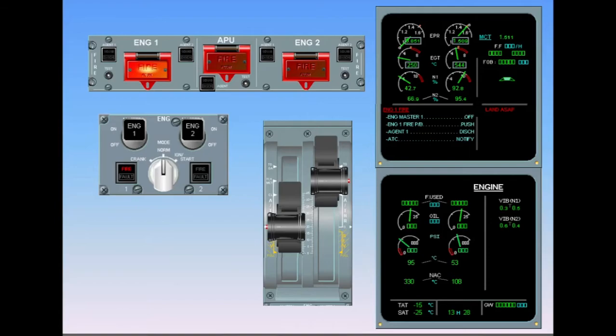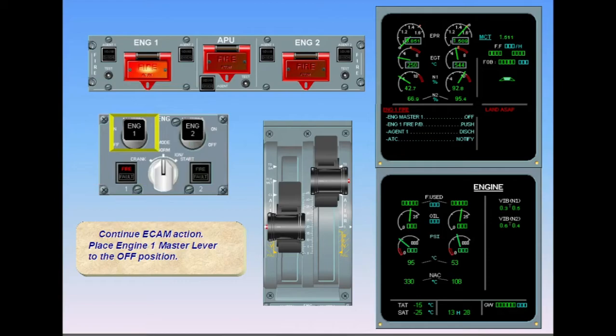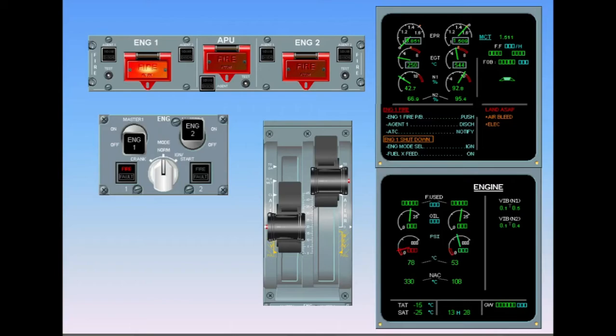Continue ECAM action. Place Engine 1 Master Lever to the off position. After having switched Engine 1 off, the after Engine 1 shutdown procedure is shown on the EWD. Since the IP and HP valves close and the generator is no longer operating, air bleed and electrical are shown as secondary failures.